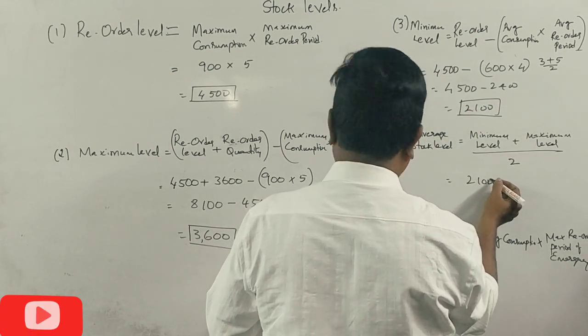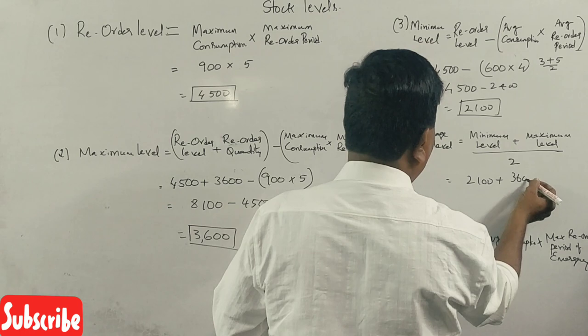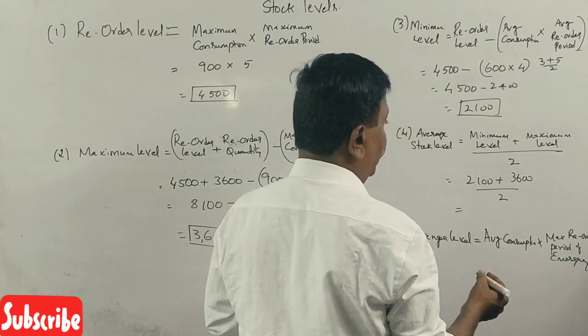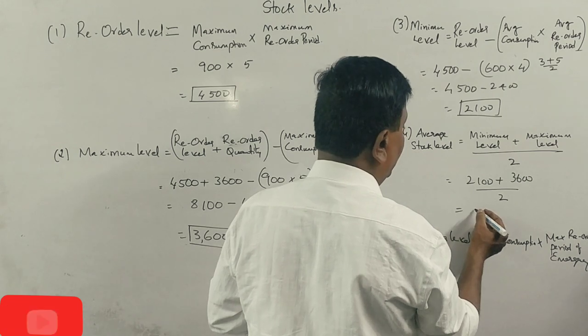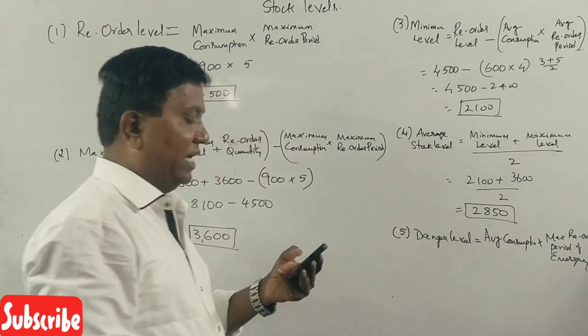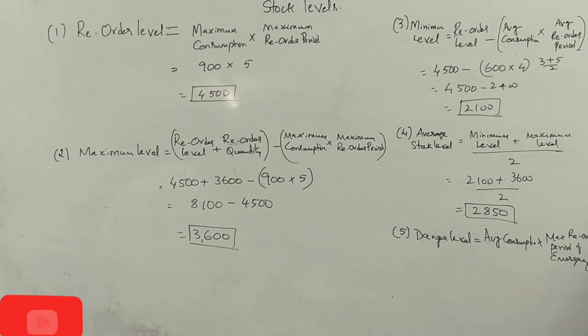Now 2100 plus 3600 divided by 2 is the average stock level, 2850. But that is part of the question.